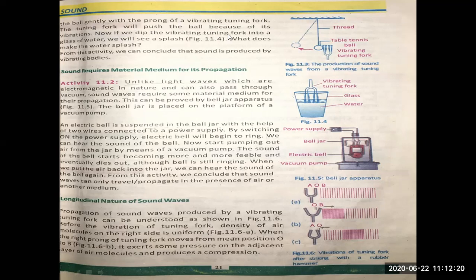Another example: if we dip the vibrating tuning fork into a glass of water, you will see a splash. The water will fly over. Due to the vibration of the tuning fork, the splash will occur. So the three examples we discussed: the tuning fork produces vibration, the vibrations have energy, and they transfer energy from one place to another — the ball moves, and the water splashes.